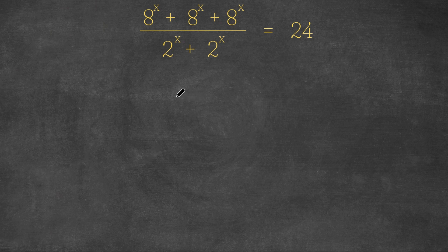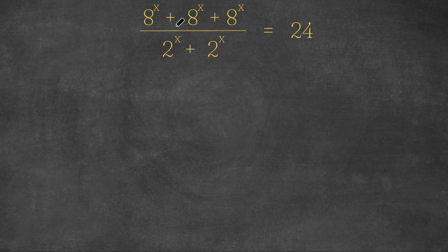Hey guys, welcome back to Click Academics. In today's video, I'm going to be teaching you guys how to solve this exponential equation. So we have 8 to the power of x plus 8 to the power of x plus 8 to the power of x divided by 2 to the power of x plus 2 to the power of x, is equal to 24.